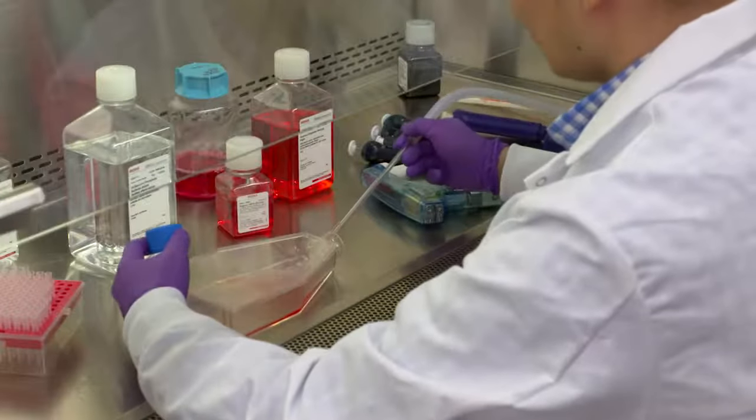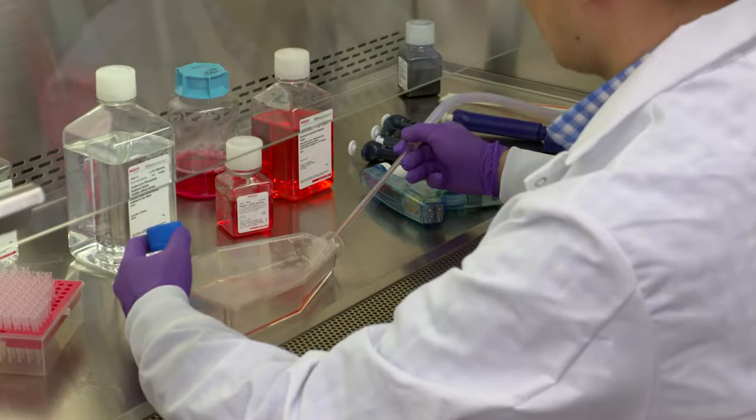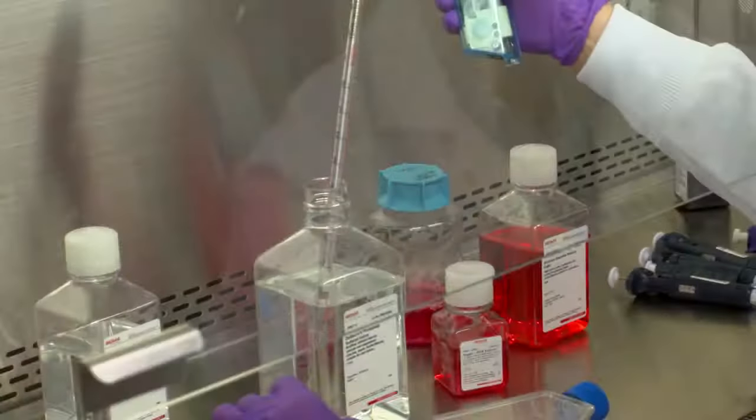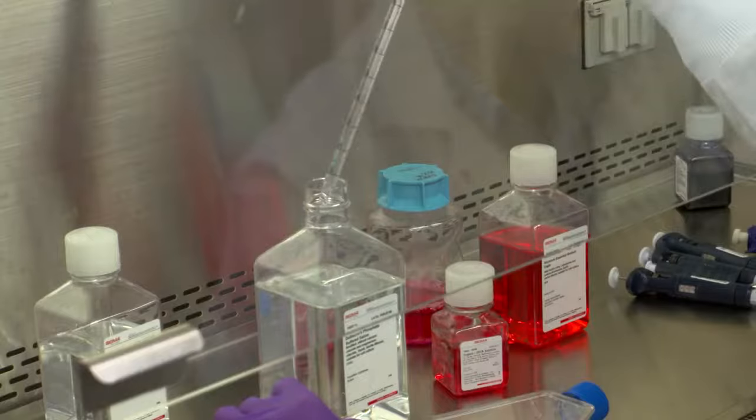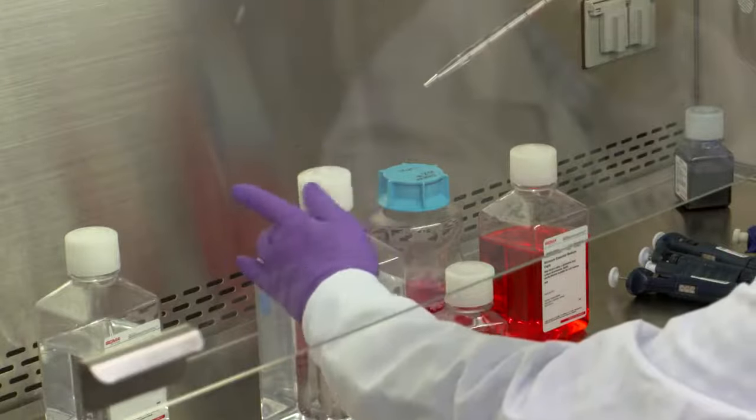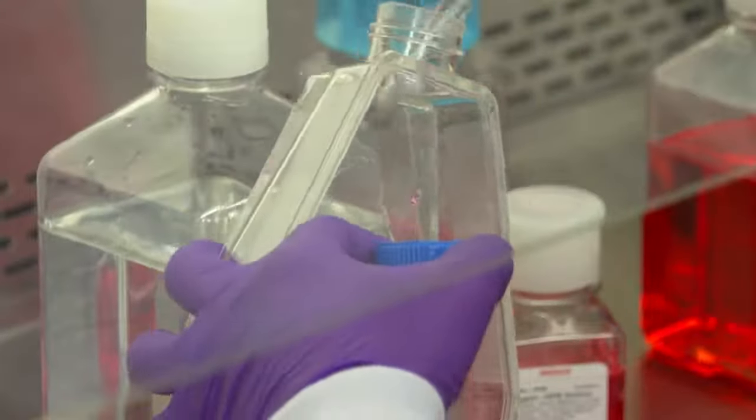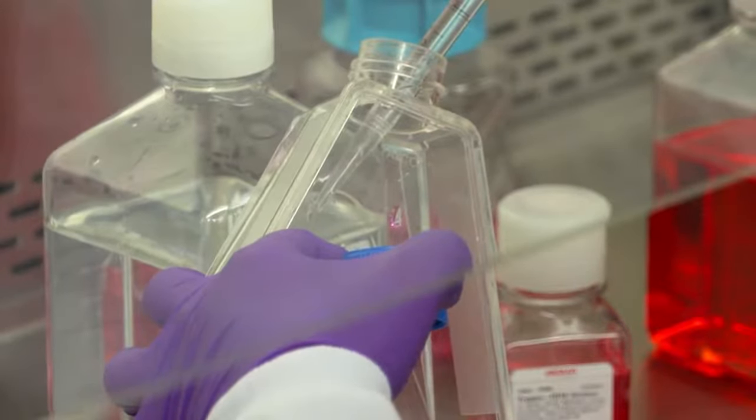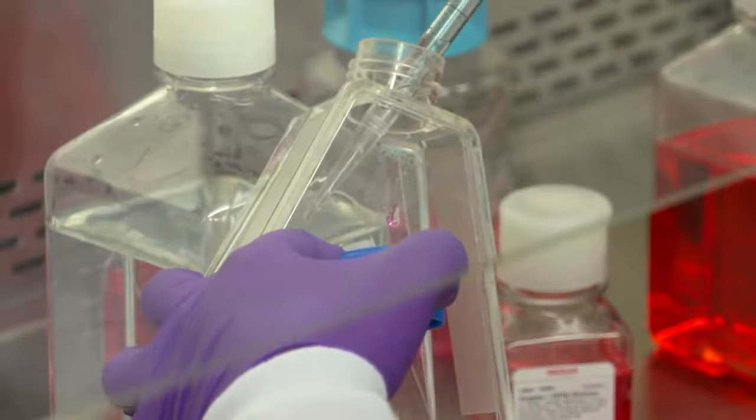Place the flask in biosafety hood. Remove the media and gently wash the cell monolayer with room temperature PBS or HBSS. Carefully add PBS to the side of the flask as to not forcefully dislodge adherent cells.